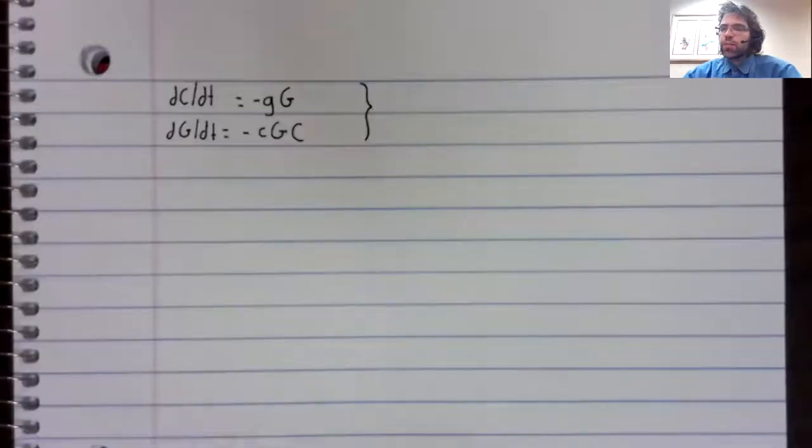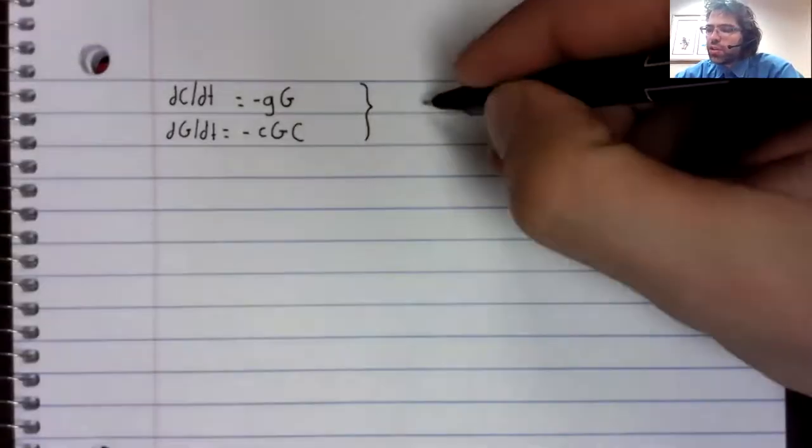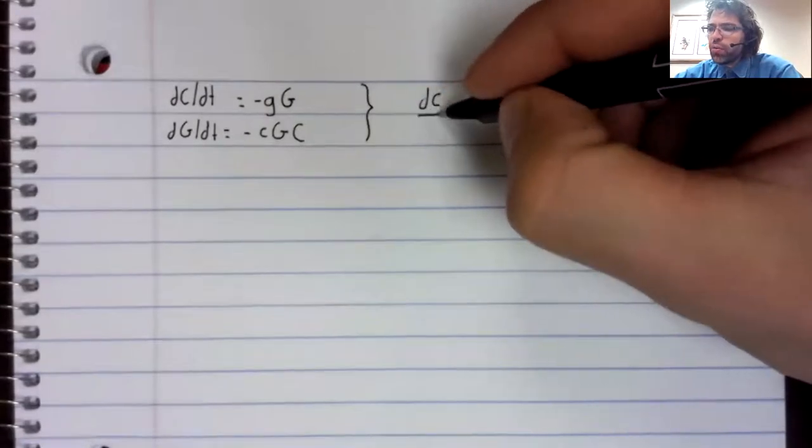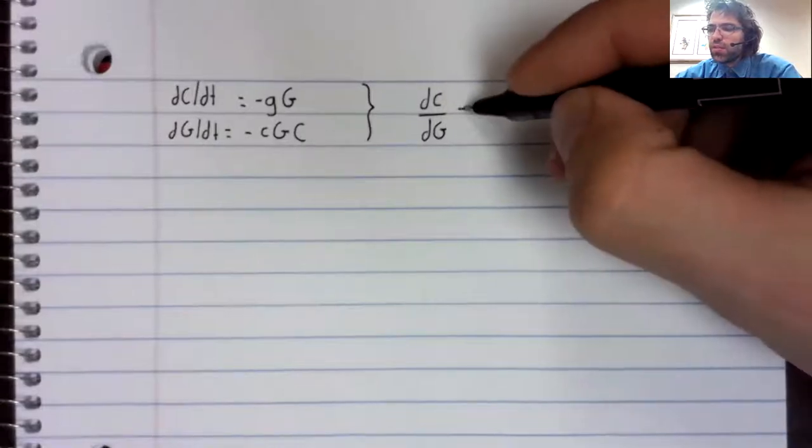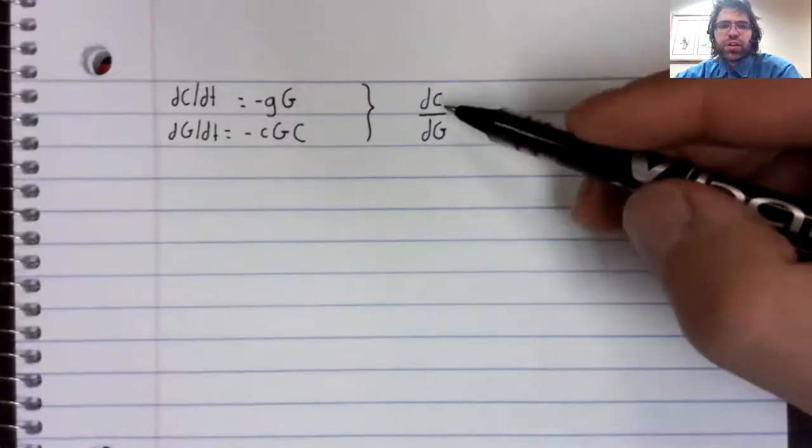We will use parametric derivatives to evaluate the conventional versus guerrilla army situation, just as we did when we were looking at two conventional armies at war. We are once again neglecting reinforcements to find the derivative of the conventional army with respect to the guerrilla army.